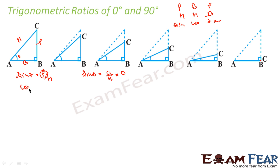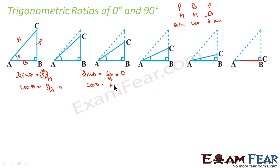Similarly, cos theta is equal to b by h. So cos 0 will be equal to — if you see this base, this base becomes equal to the hypotenuse. If you are reducing the angle, we see that base and hypotenuse are the same. So b by h becomes 1, which equals 1.